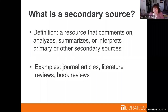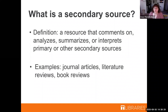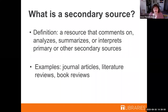We wanted to start off with some definitions, because in libraries we sometimes use words that librarians know what they mean but it's not always evident to others. The first thing we're going to talk about is: what is a secondary source? A secondary source is basically a resource that comments on, analyzes, summarizes, or interprets a primary source or other secondary sources. Examples include journal articles, literature reviews, book reviews, and documentaries. We're mostly going to focus on journal articles today.